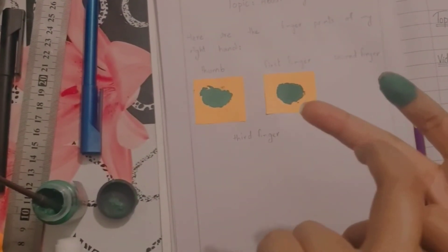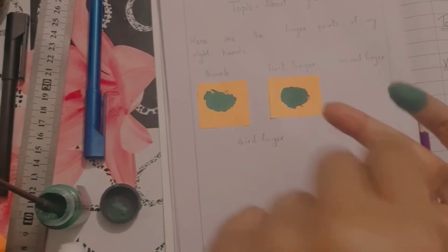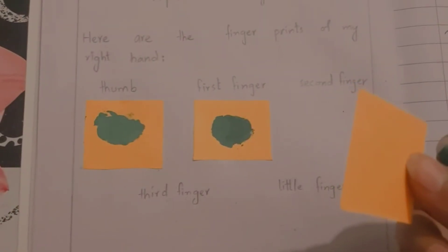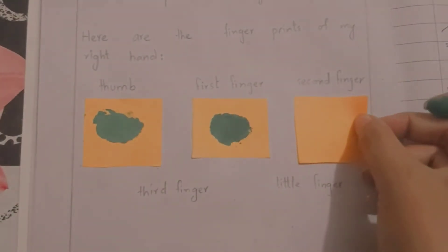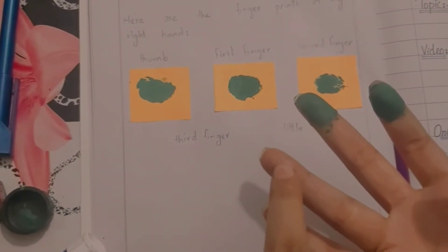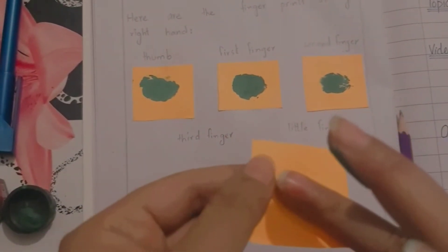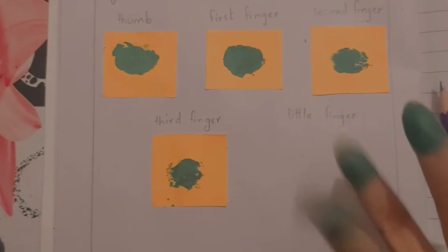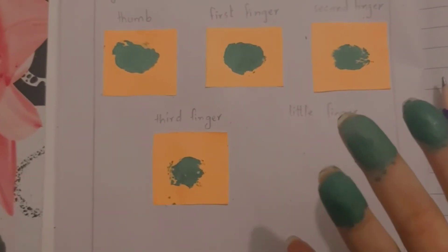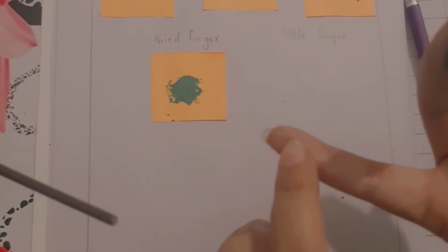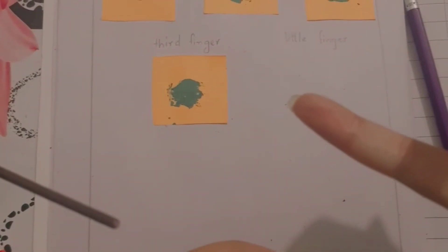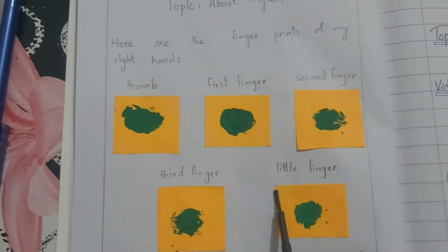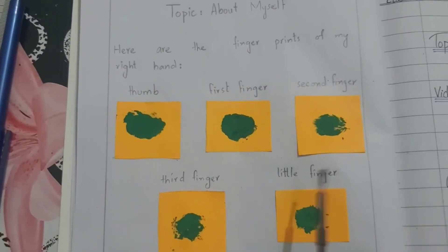Now we will paint our second finger — this is your second finger. We will paint it and then paste our fingerprint right here, and stick it with the help of glue. Now paste this piece of paper right here. This is your third finger; we will paint it now and then paste it here and stick it right here. Now this is done. Let's paint our little finger, then press it on this piece of paper. Your fingerprints of your right hand are done on your notebook.